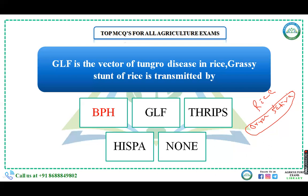The next question: Green Leaf Hopper (GLH) is the vector of Tungro disease in rice. Grassy stunt disease of rice is transmitted by — the first option states that Green Leaf Hopper (GLH) is the vector of Tungro disease. You must know that Tungro is a unique disease caused by two viruses.